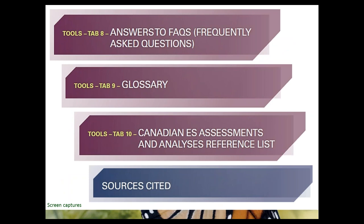Tool Tab 8 contains all the answers to the 45 FAQs incorporated into the chapters. Tool Tab 9 is the glossary, and Tool Tab 10 is a bibliographic reference list, particularly of studies done in Canada. It's already somewhat outdated — added to less than a year ago — because the amount of literature being published in this field is quite astronomical. The final section is a 21-page linked reference list of sources cited. Ensuring the toolkit is a high-quality technical resource based on expert literature was a top priority.